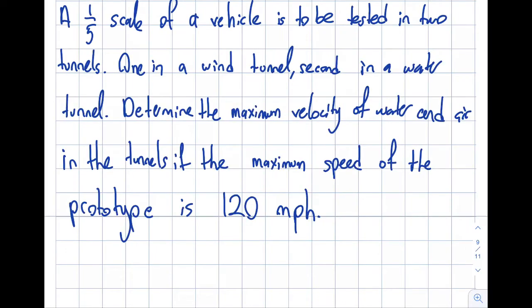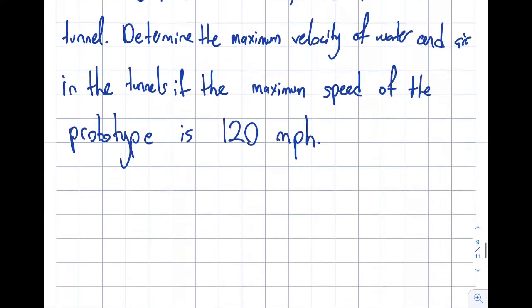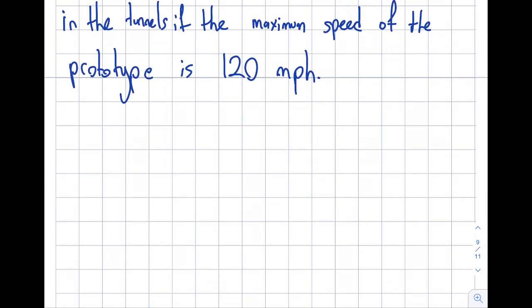Let's write the Reynolds number. Reynolds number equals ρVL over μ. If you remember, we established kinematic viscosity ν, which is absolute viscosity divided by density.